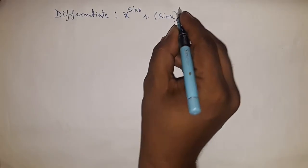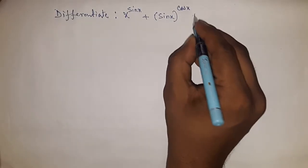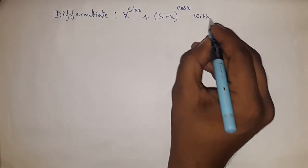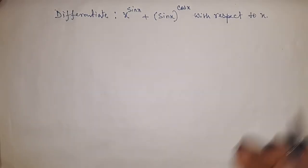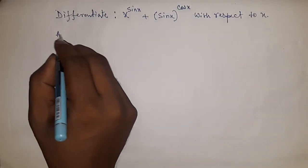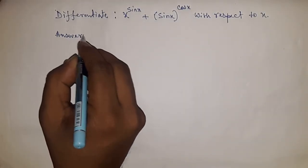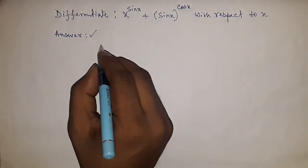The problem is: differentiate x to the power sine x plus sine x to the power cos x with respect to x. So we have to differentiate this function with respect to x. Don't waste time, let's start.